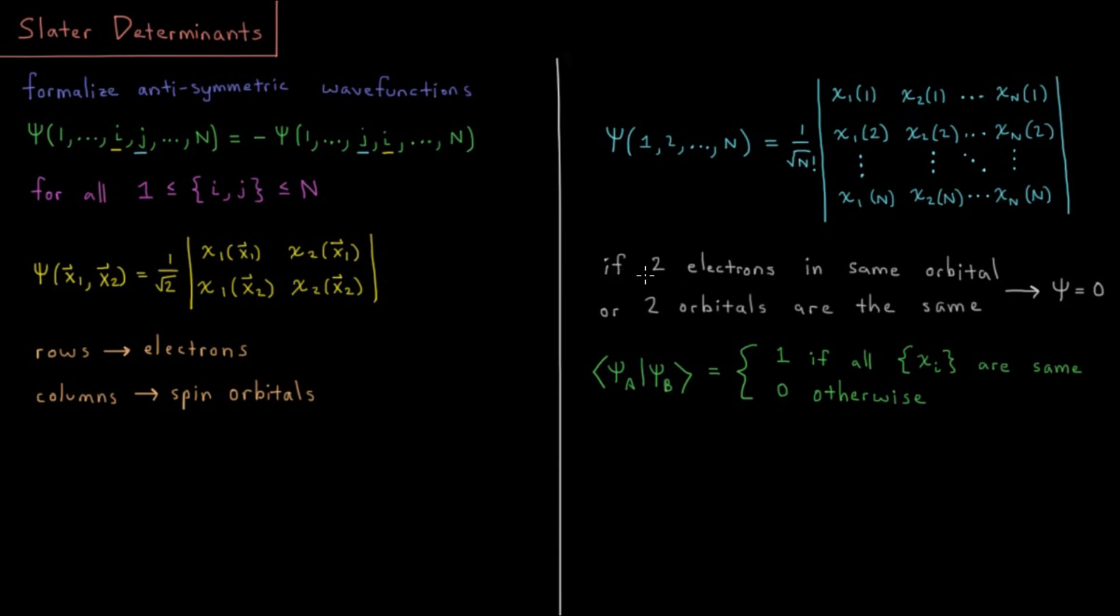If that happens, if two electrons are in the same orbital, what's going to happen is that you'll have two of these rows or two of these columns being the same if two of these spin orbitals are the same. And in any determinant, if two of the columns are the same, then the entire determinant goes to zero.